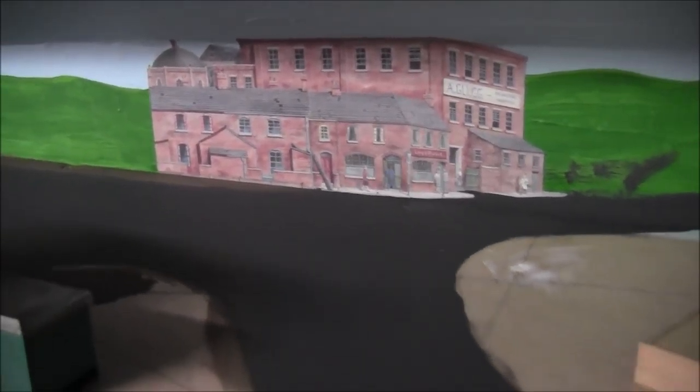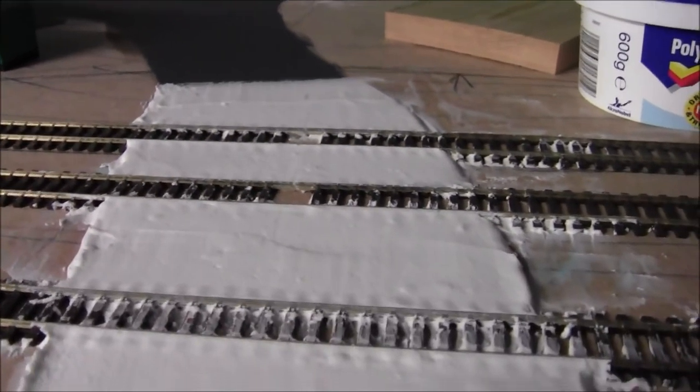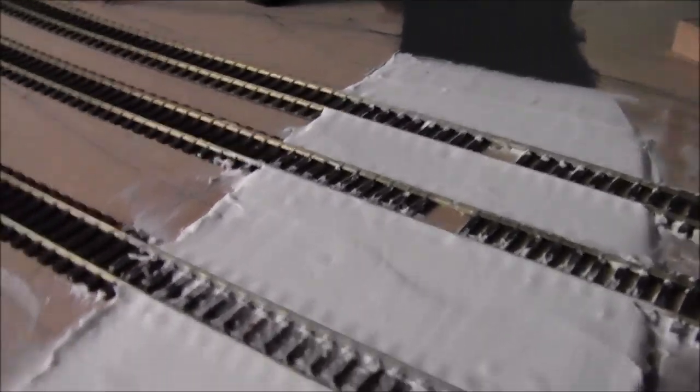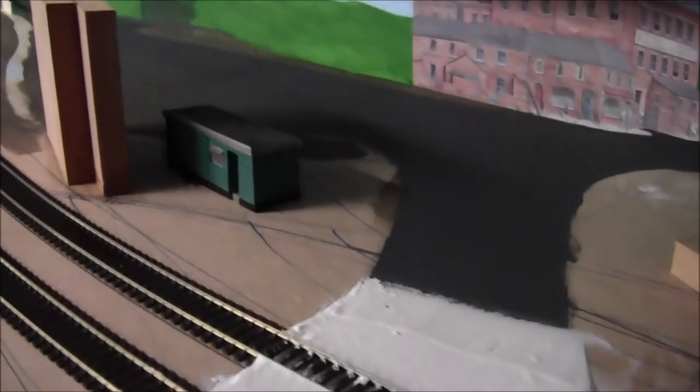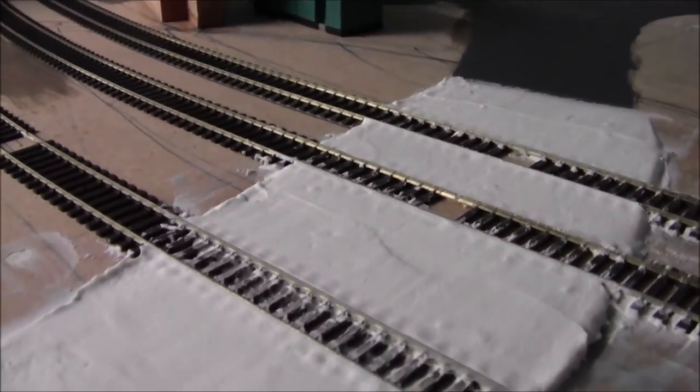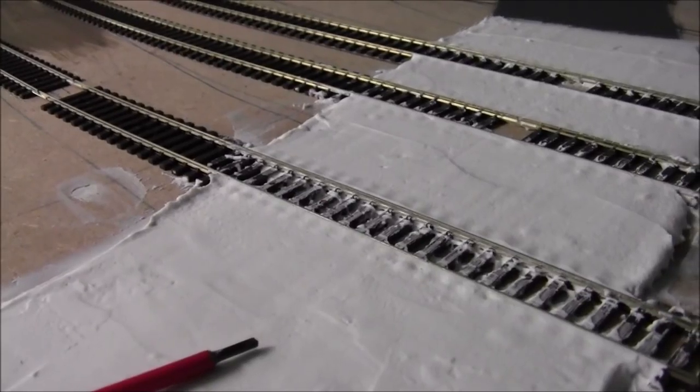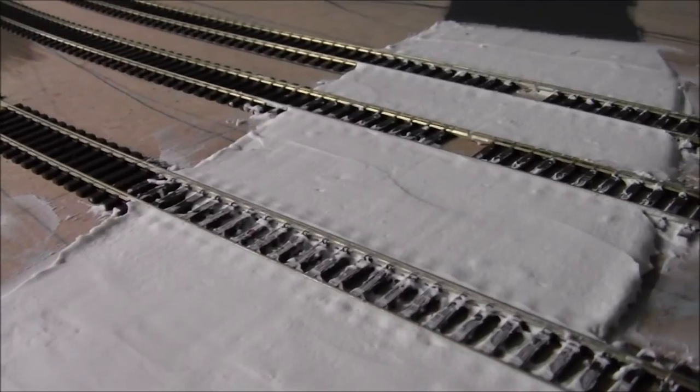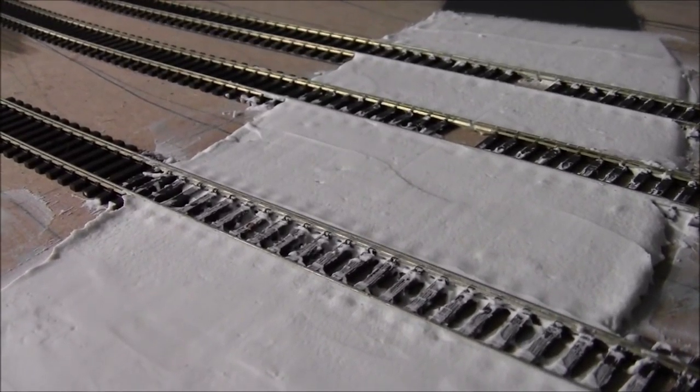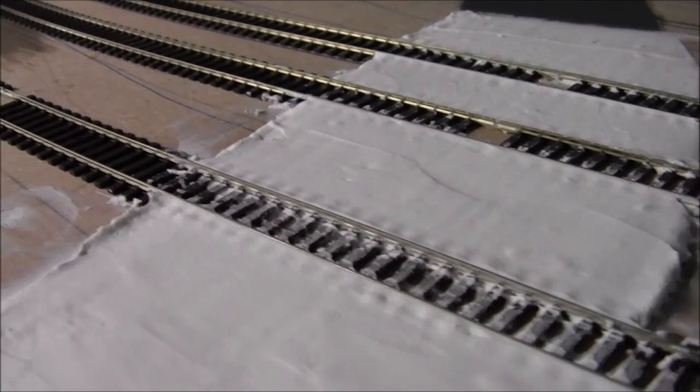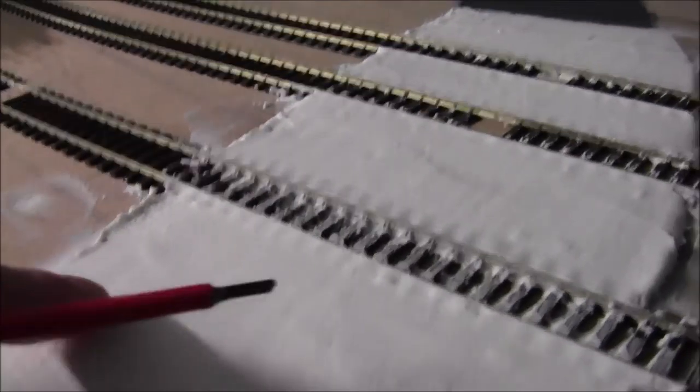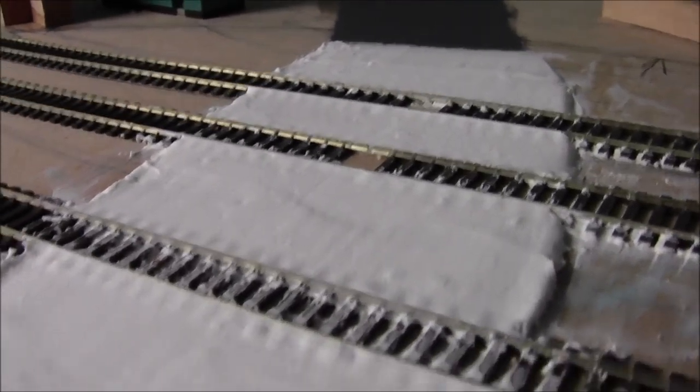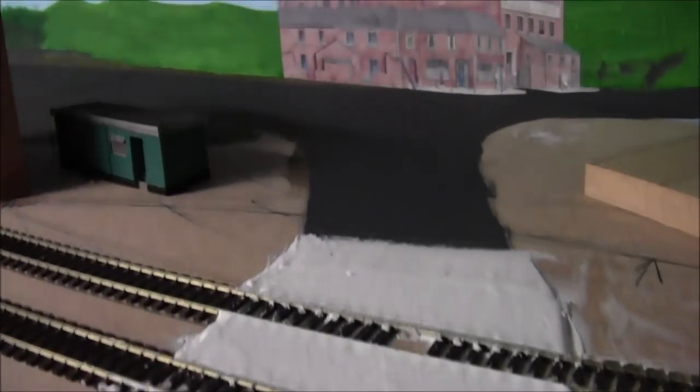If we come further back away from the T junction, I've been putting in a level crossing. I'm going to do all this work before the upper level goes on. All I've done here is I've used PVA mixed in with polyfiller, and it's gone rock hard. That was done a couple nights ago, so all I've got to do now is rub that down and paint it the same color as the road.